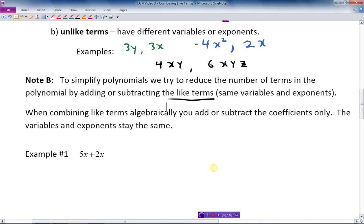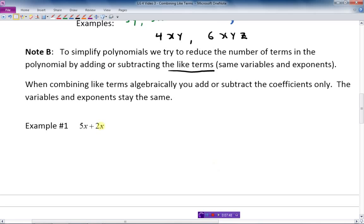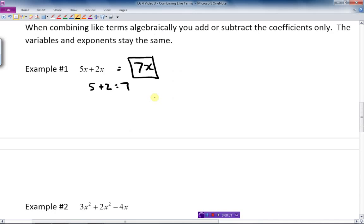So the first example, 5x plus 2x, what I do is I add the exponents. 5 plus 2 equals 7. So the answer is 7x. If it was a minus, I'd subtract the exponents.